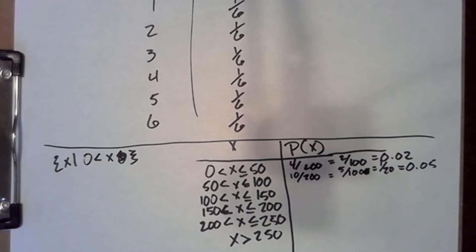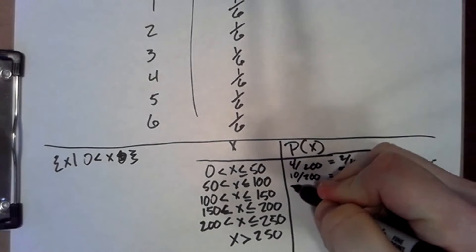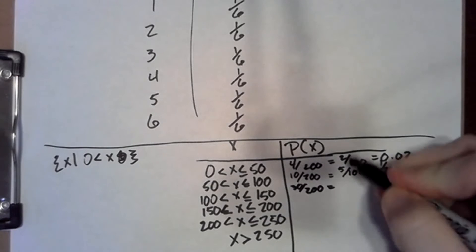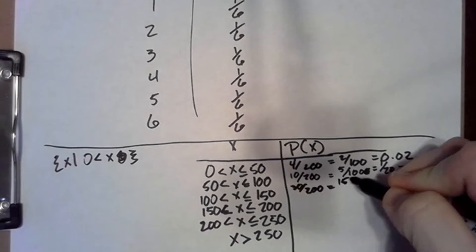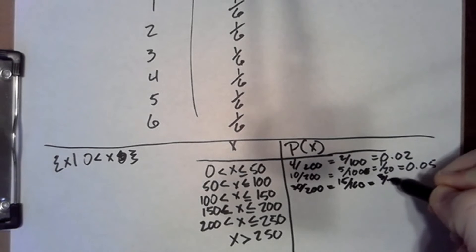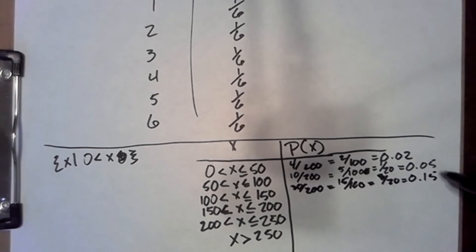From 100 to 150, that occurs 30 times. So, we could write that as 15 out of 100 or 3 out of 20 or 0.15.